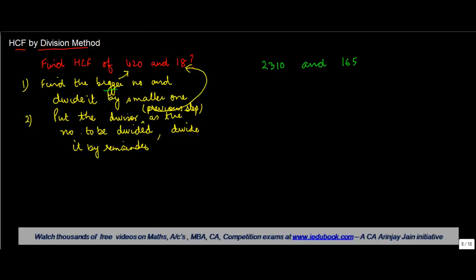Find the bigger number which is 2310 and divide it by the smaller number. So, basically, when you have to divide 2310 by 165, you have to take a multiple so that this entire 2310 is exhausted.